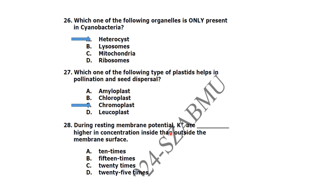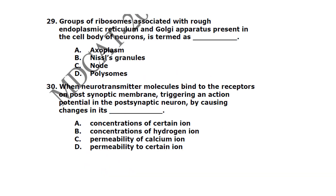During resting membrane potential, potassium ions are at a higher concentration inside than outside the membrane. The correct answer is 30 times — potassium ions are 30 times higher in concentration inside than outside the membrane.